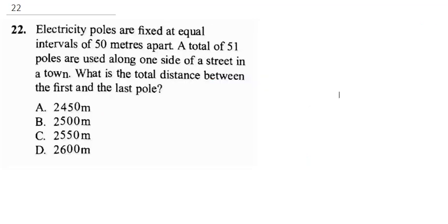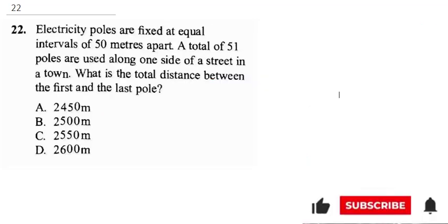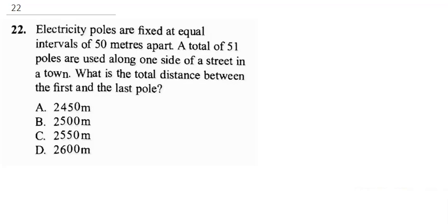The next question says: electric poles are fixed at equal intervals of 50 meters apart. A total of 51 poles are used along one side of a street in the town. What is the total distance between the first and the last pole? The first thing you need to understand is these are the poles — this is pole one, and between one pole and another pole electricity lines are connected.